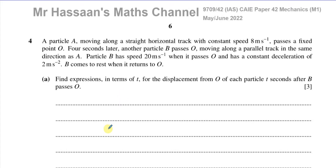In this question, we have a particle A moving along a straight horizontal track with constant speed 8 meters per second, passing a fixed point O. Four seconds later, another particle B passes O, moving along a parallel track in the same direction as A. Particle B has a speed of 20 meters per second.